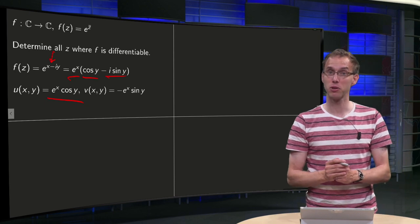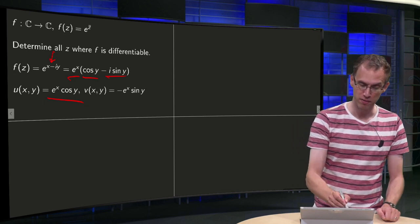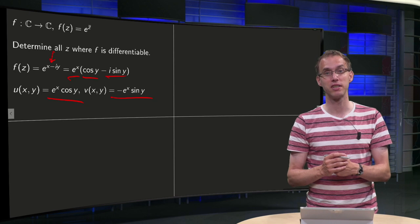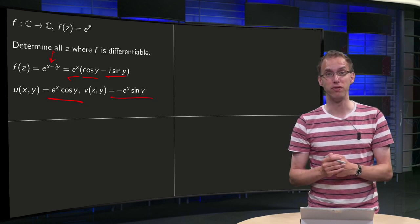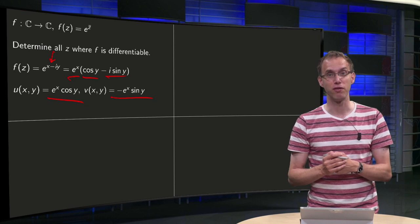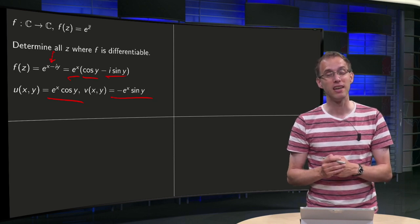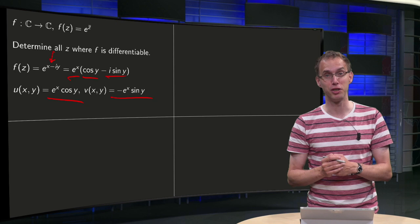u equals e^x cos y and v equals minus e^x sin y. So the component functions u and v are nicely differentiable everywhere. But does this mean that f(z) is everywhere differentiable as well?